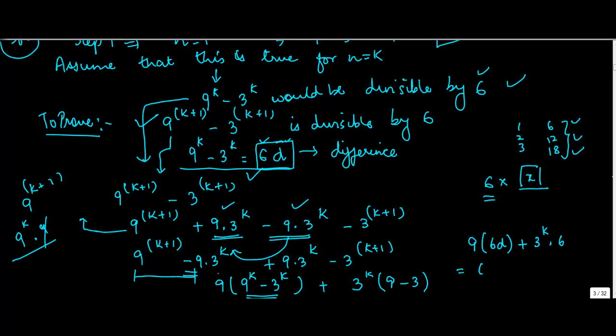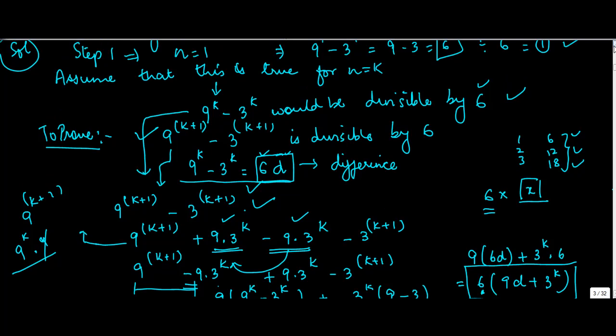Now, if I take 6 common, what am I left with? I am left with 9d plus 3^k. Which means that this number, whatever I got on an overall basis, is divisible by 6. And hence, we can prove the given theorem by induction.